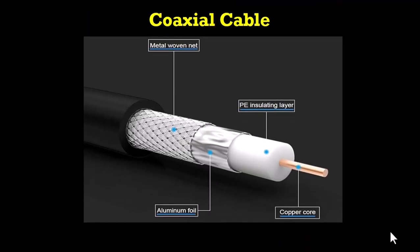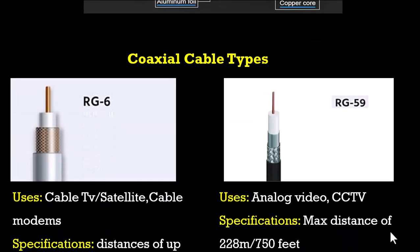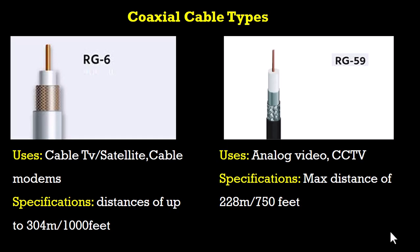The next type of cable is the coaxial cable, used for various types of data transmission including cable television and traditional Ethernet networks. It has a plastic jacket, a metal shielding, a dielectric insulator, and a center wire conductor. There are two types: the RG6 and the RG59. The RG6 is used in cable TV, satellites, and cable modems with distances of up to 304 meters or 1000 feet, while the RG59 is used in analog video or CCTV connections with a maximum distance of 228 meters or 750 feet.